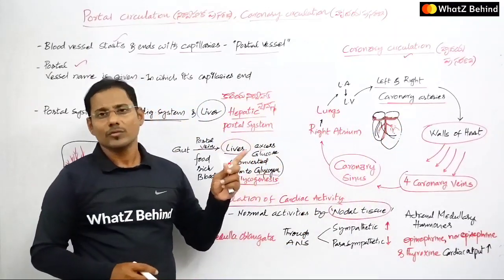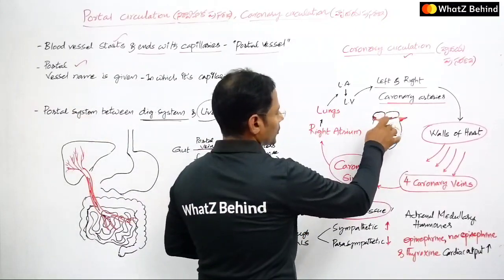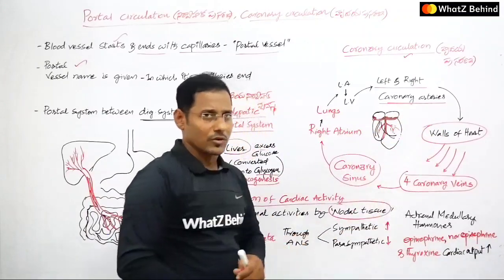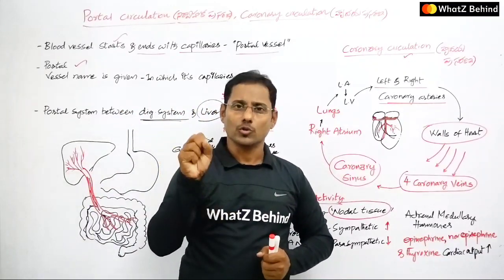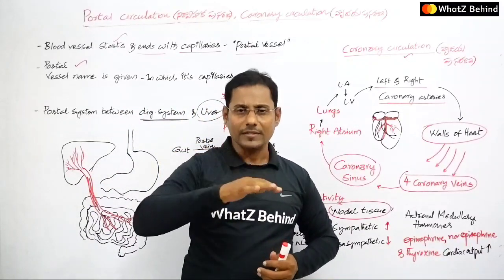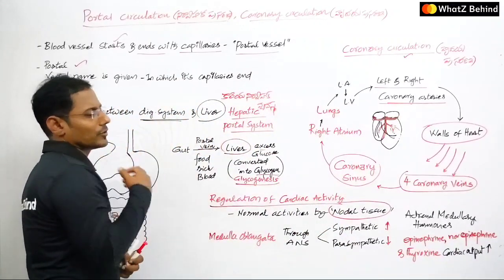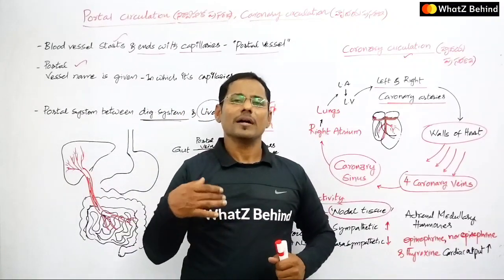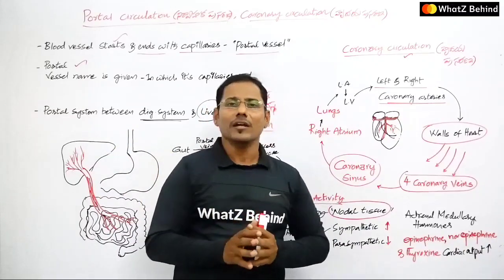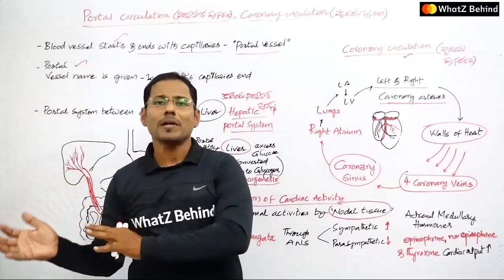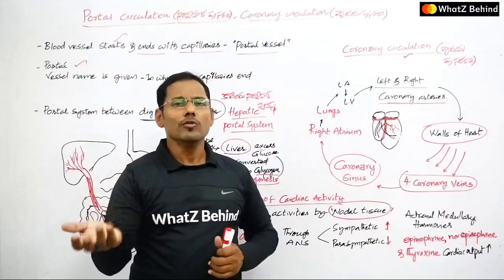There are two nodal tissues: the sinoatrial (SA) node and the atrioventricular (AV) node. Along with Purkinje fibers and bundle of His, the entire cardiac activity — contraction and relaxation, systole and diastole — is controlled by the nodal tissue. The normal heart beat rate is around 70-72 beats per minute. The brain's medulla oblongata regulates this cardiac activity.